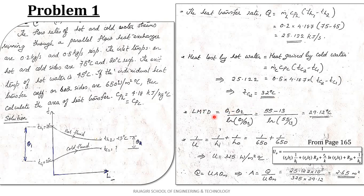Now calculate the LMTD: θ_m = (θ1 − θ2) / ln(θ1/θ2). Here θ1 = 75 − 20 = 55, and θ2 = 45 − 32 = 13. So LMTD = (55 − 13) / ln(55/13) = 29.12°C for the given parallel flow heat exchanger.